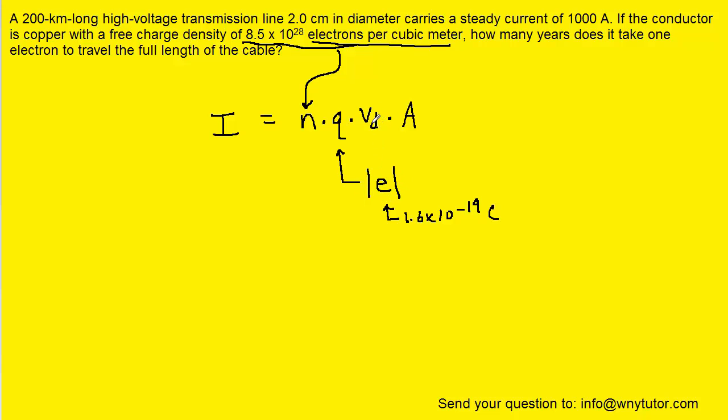V sub D is the drift speed, and then A is the cross-sectional area of the wire. We can assume this wire is cylindrical, so the cross-sectional area is the shape of a circle, and the area of a circle is pi times the radius squared.